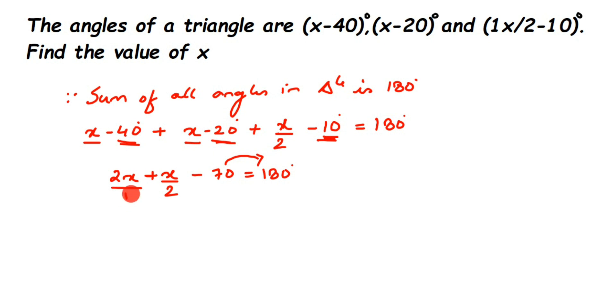For 2x/1, I'm going to multiply by 2 in the numerator and denominator to get denominator 2. Plus x/2 remains the same. This equals 180° plus 70.